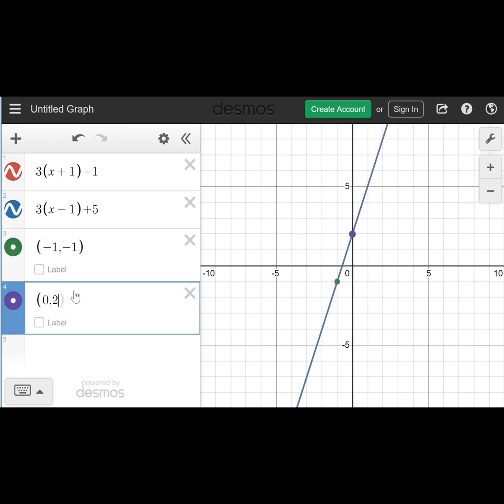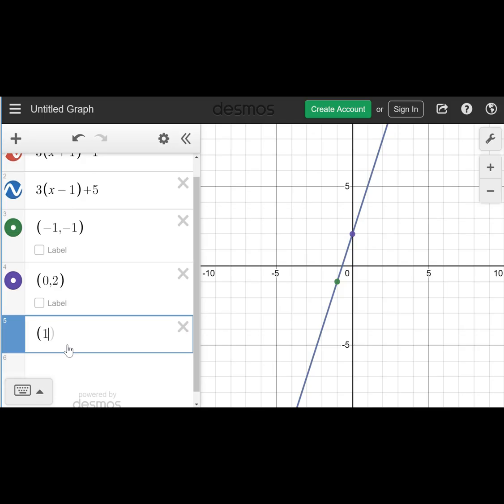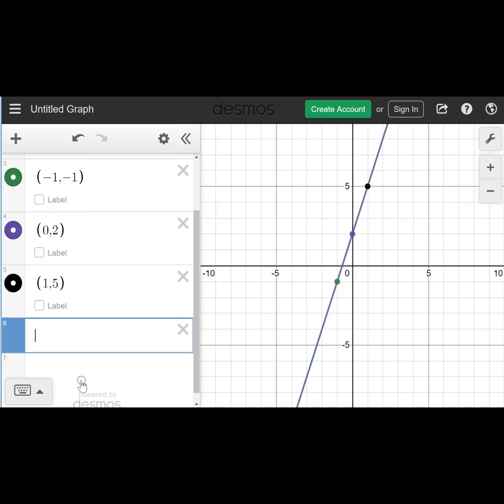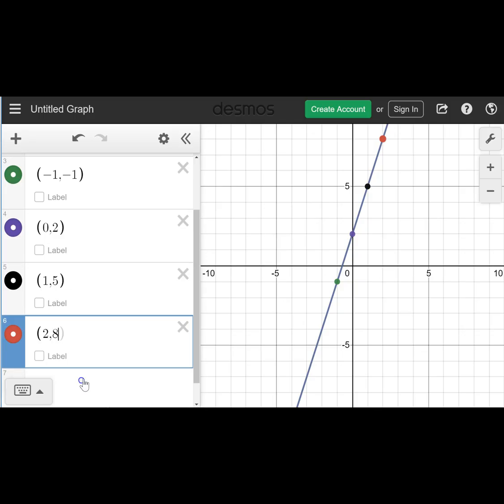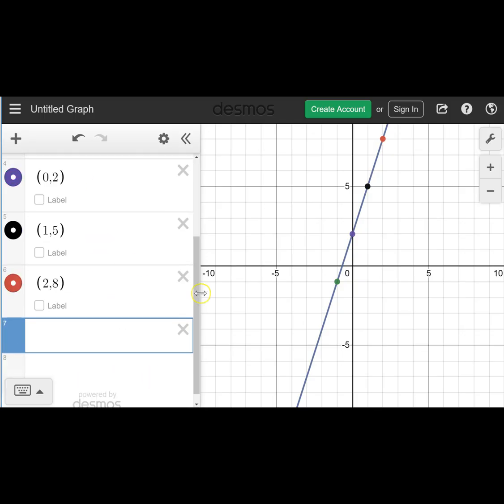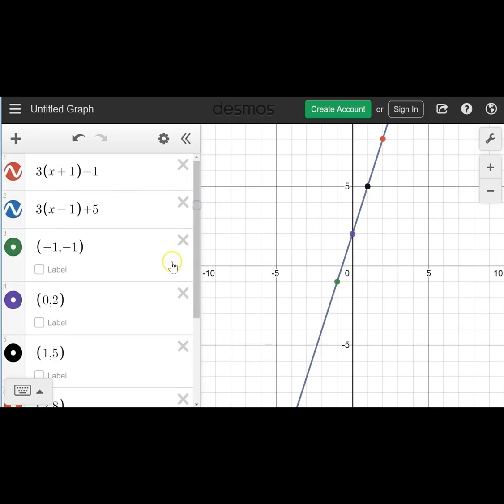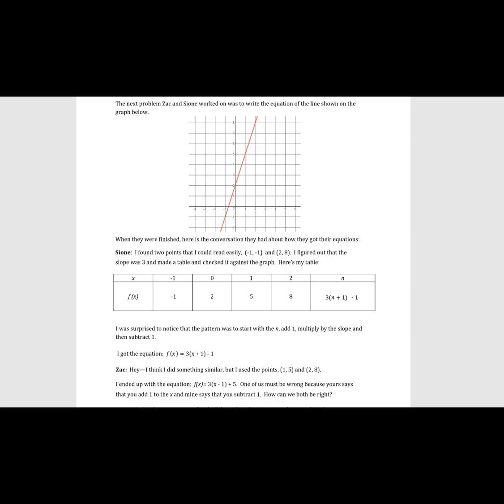And so we can see all the points from the table: negative 1, negative 1, that's on that graph. 0, 2 is on there, 1, 5 is on there, and then the last point from the table, 2, 8 is on there. So not only are they equivalent, but they both match the graph that we were given.